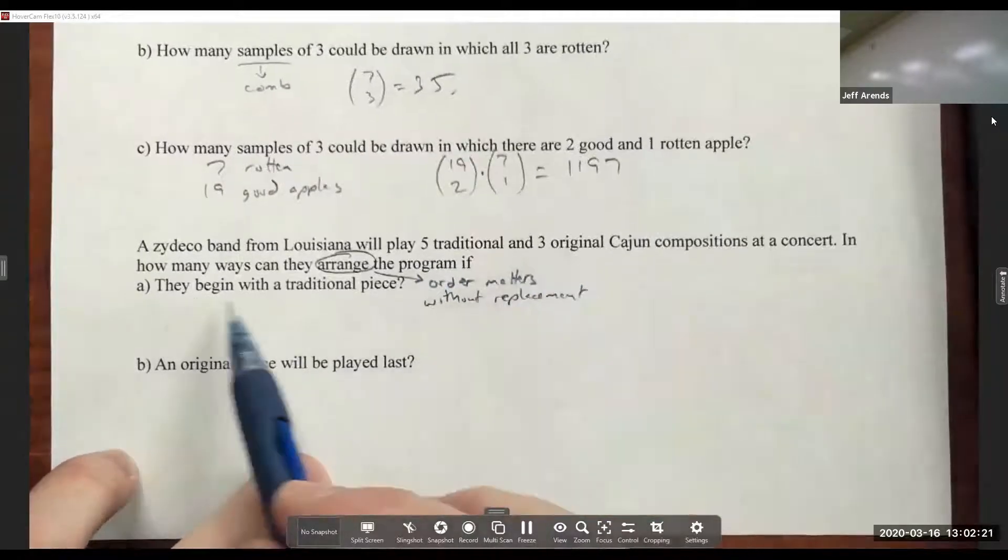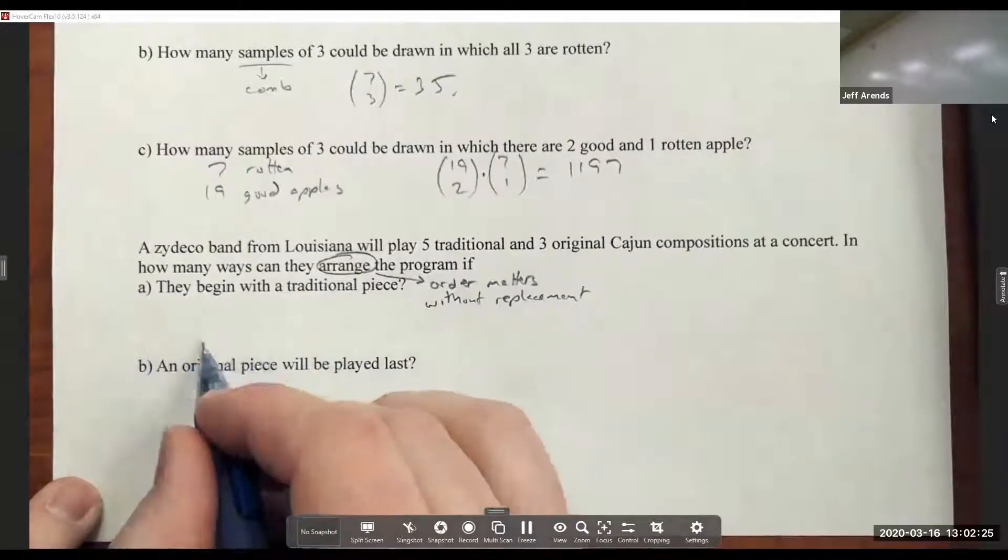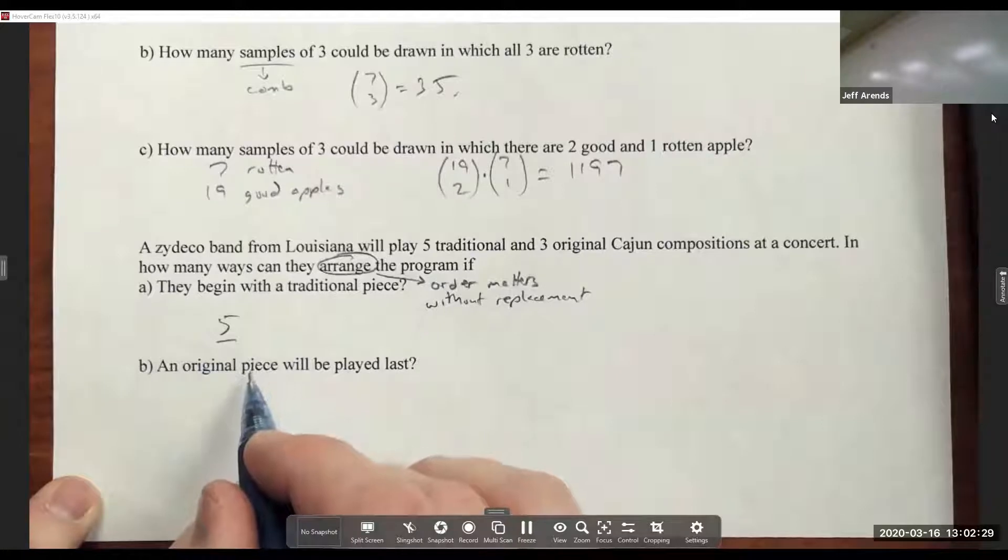So if they want to begin with a traditional piece, that means they have five different choices for their beginning song. And then there are what, there's...